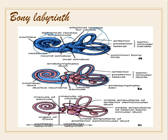Here is the cochlear duct and the ductus reuniens, the saccule, the utricle, and the endolymphatic sac. These are the three semicircular canals with ducts inside each canal. The line inside the duct is the organ of Corti.